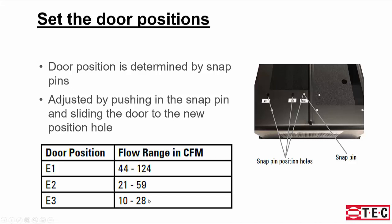I would recommend starting at the E2 setting because many exhaust fans will fall in that 21 to 59 CFM range. You can move up to door position one for higher flows or door position three, the smallest opening, for smaller flows.